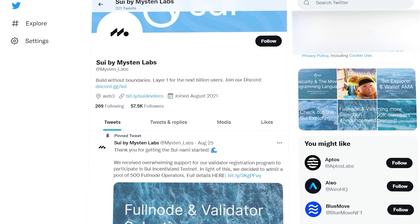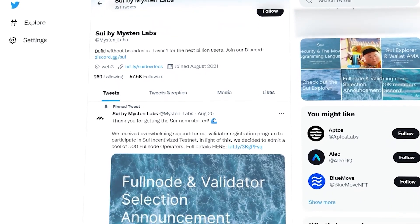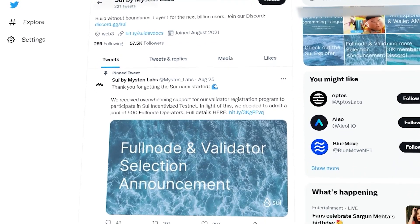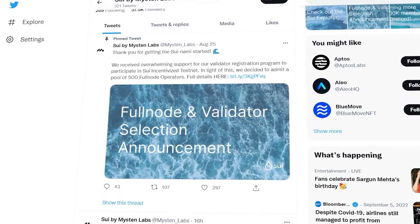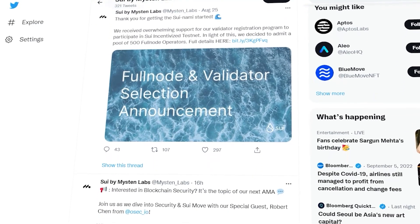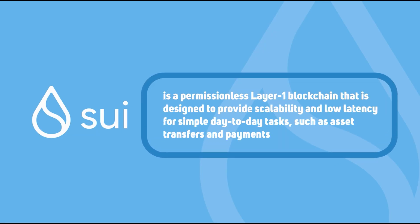Today we will take a look at a project that created quite a buzz on Twitter recently: SWE. SWE is a permissionless layer 1 blockchain that is designed to provide scalability and low latency for simple day-to-day tasks, such as asset transfers and payments.